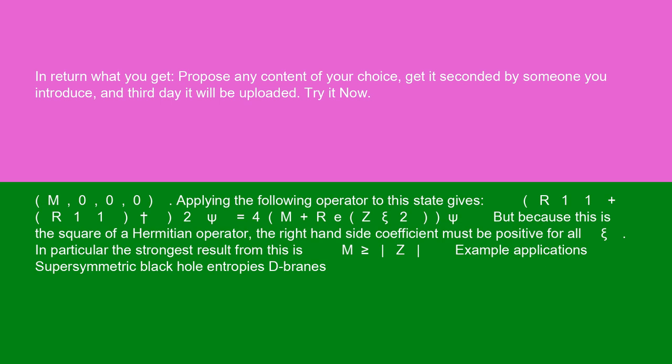Applying the following operator to this state gives: (R_11† R_11)|ψ⟩ = (4m + |Z|/ψ²)|ψ⟩. But because this is the square of a Hermitian operator, the right-hand side coefficient must be positive for all |ψ⟩. In particular, the strongest result from this is M ≥ |Z|.